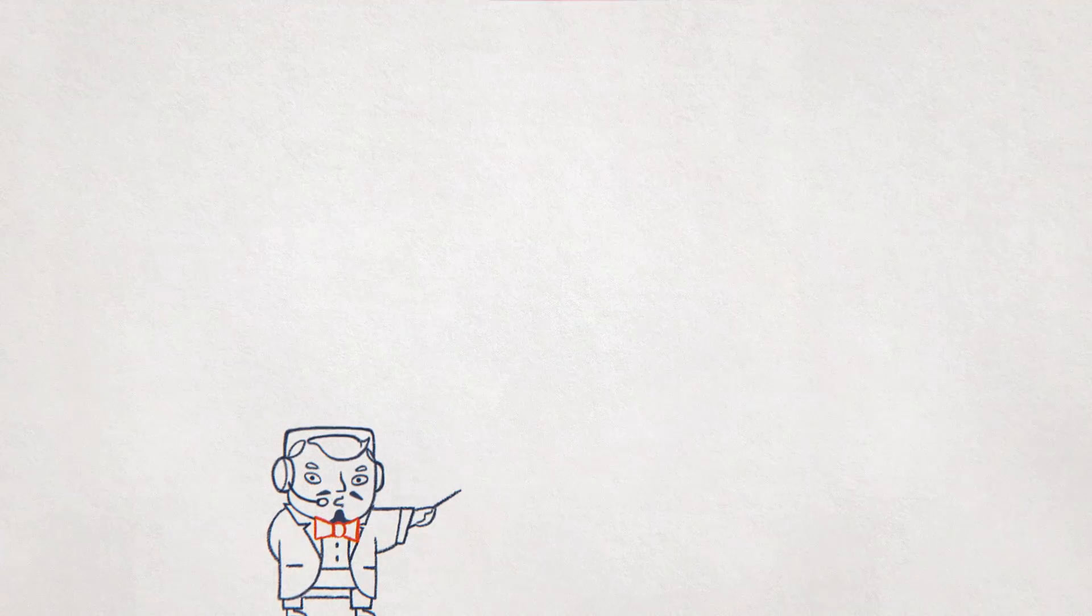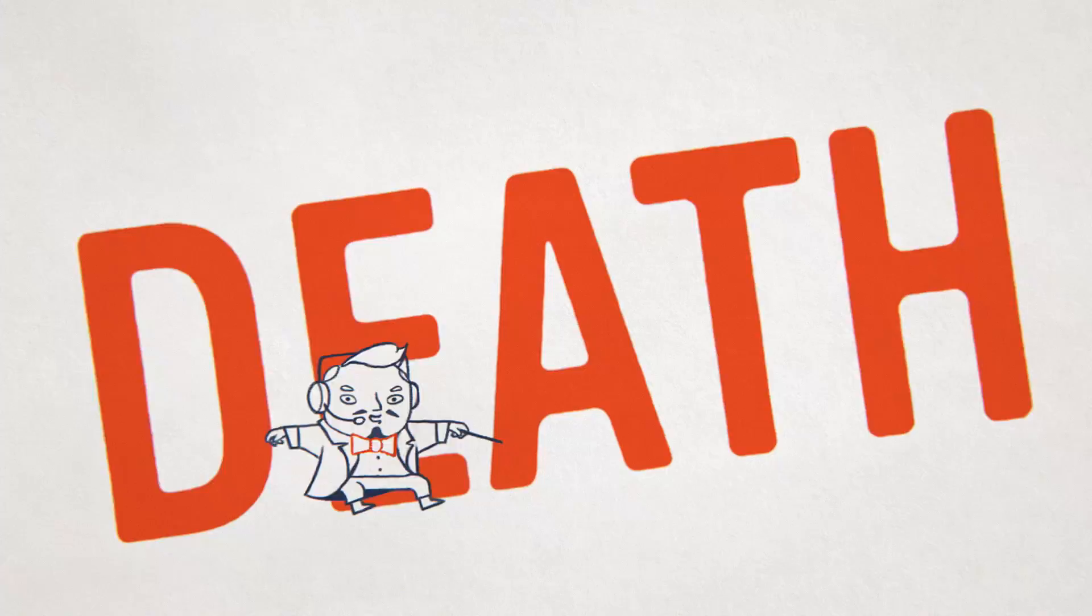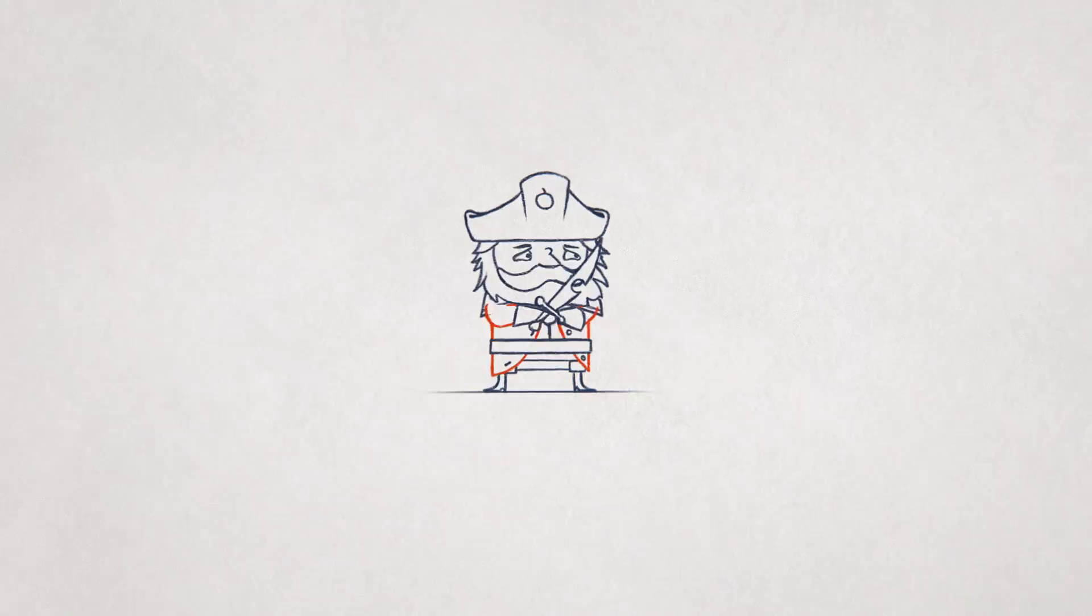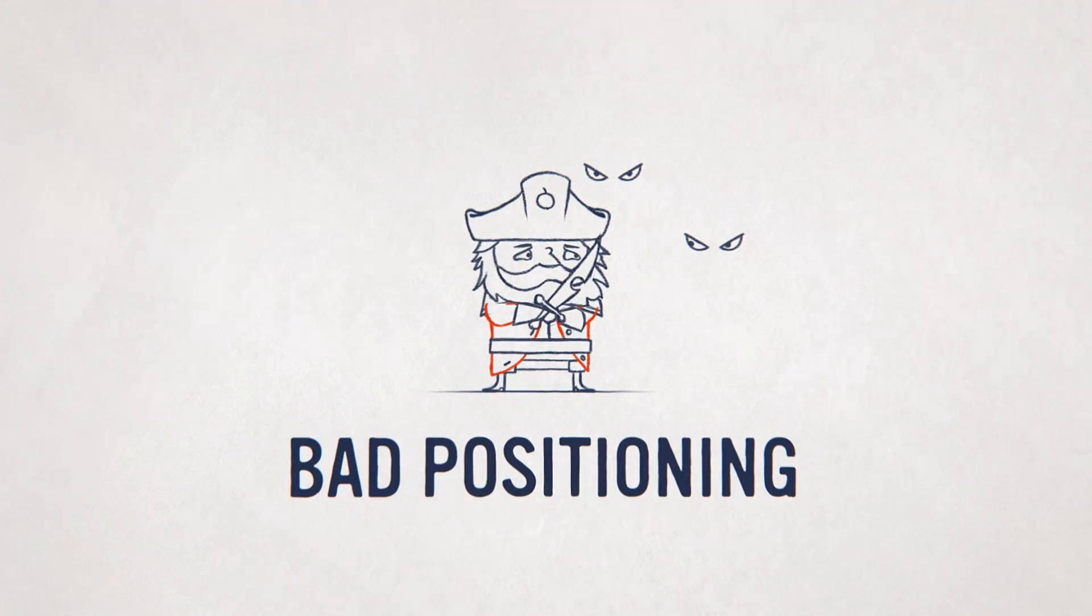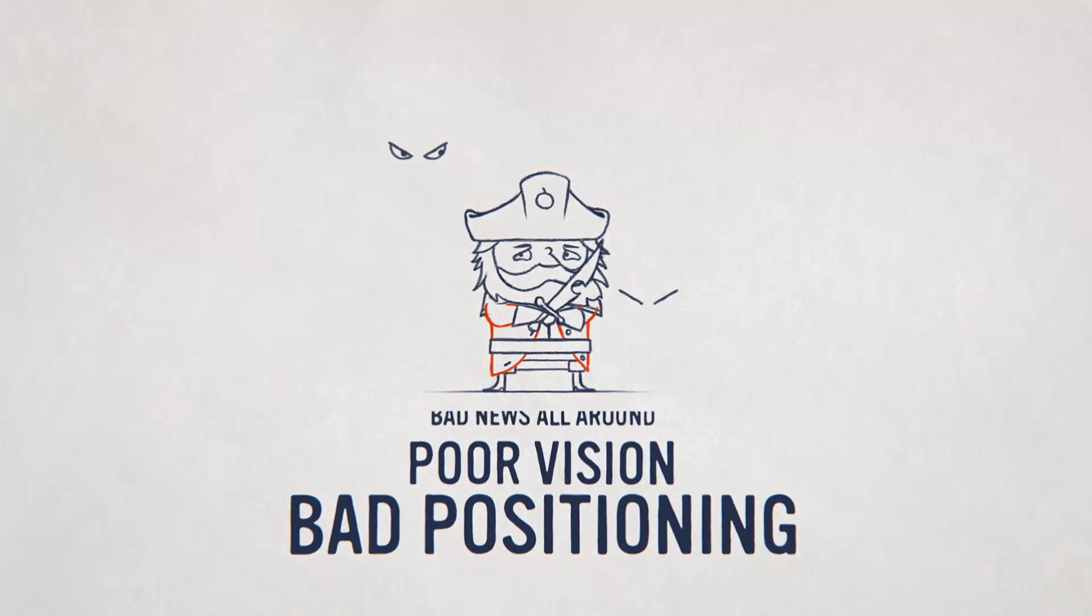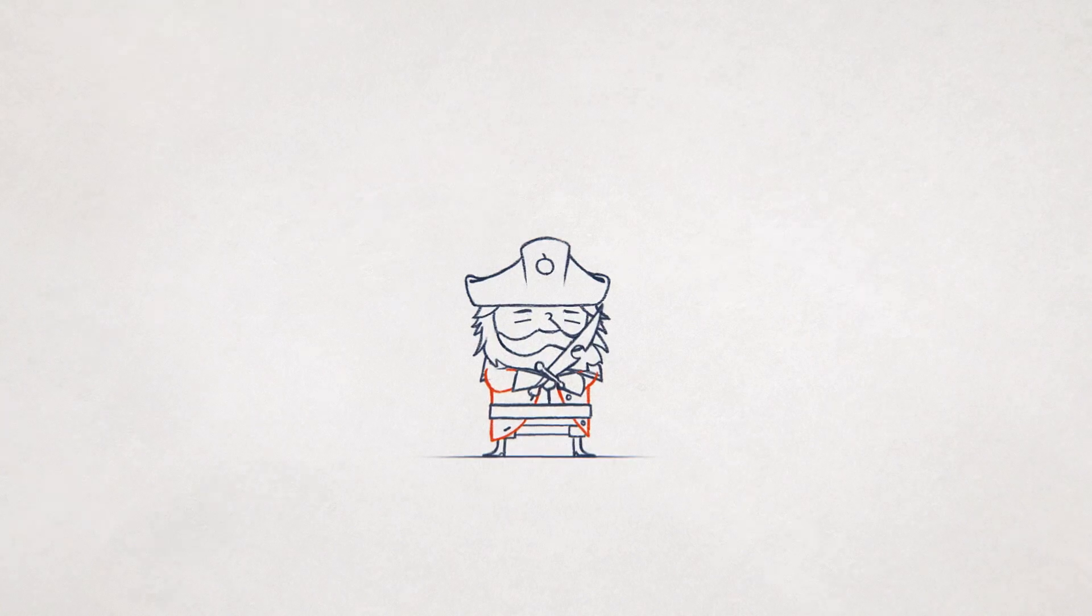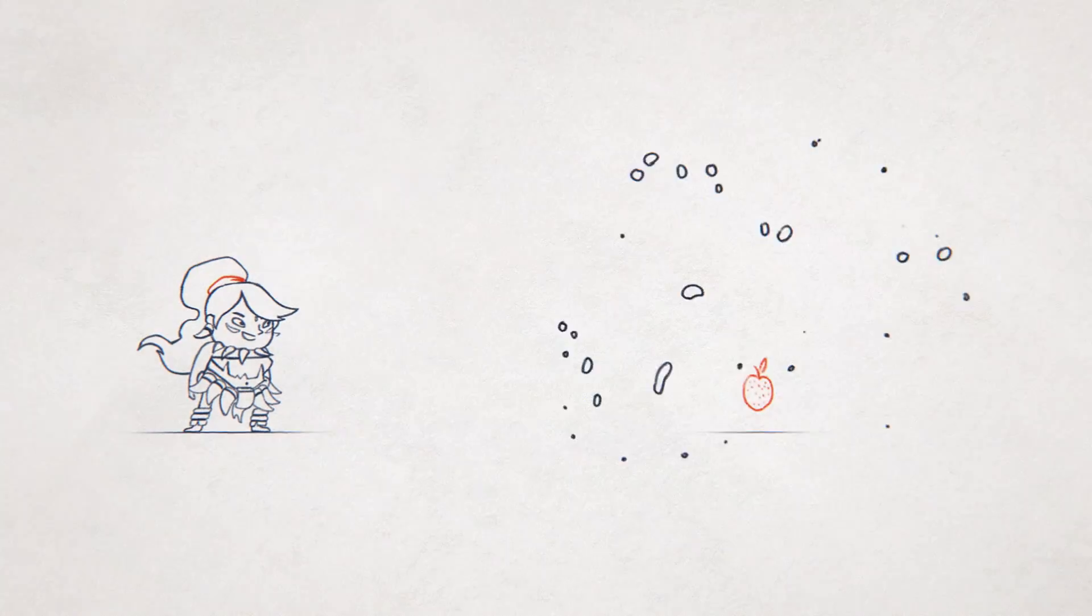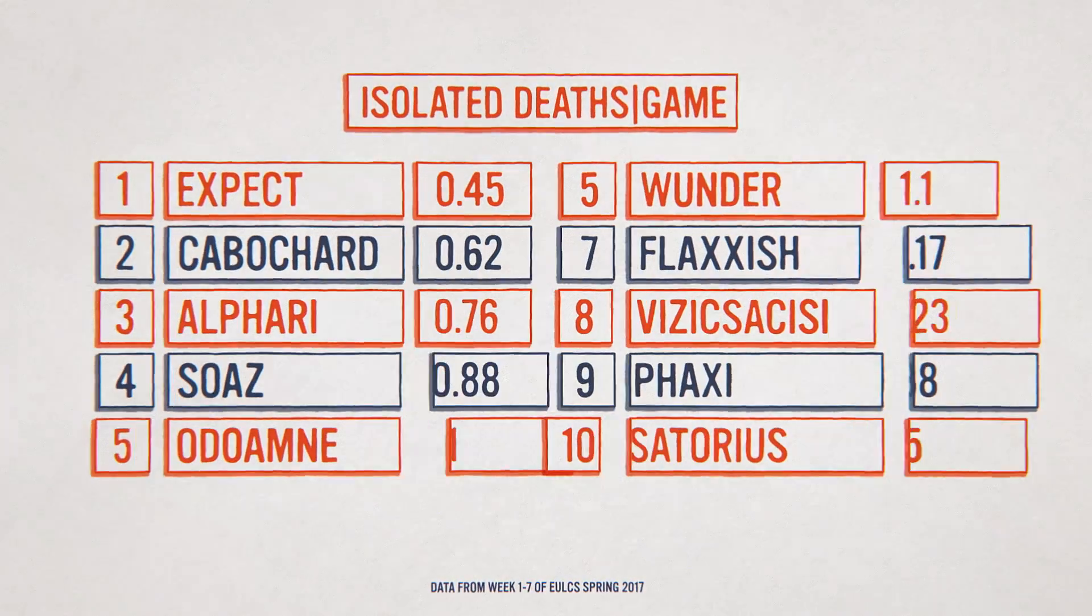But let's talk about a lighter subject, death. Now we all know dying is bad, but dying when you're caught out alone is even worse. It indicates bad positioning, poor vision, just general bad news all around. So we need to differentiate between a death and an isolated death. Isolated death means dying without any of your teammates around you, 1500 range to be exact.